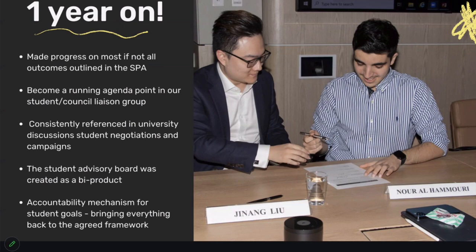We've been able to at least begin discussions and make sure the university knows we're not letting things slide. One example: we always wanted no exams worth more than 60% of the final grade, because a 60% exam is inequitable — you can pass or fail based on one exam at the end of semester. We included that in the SPA and now bring it up at meetings, write papers on it, and say: you committed in the SPA to working on equitable assessments for students — here's what we're bringing to you. This has become a running agenda point in our student council liaison group.